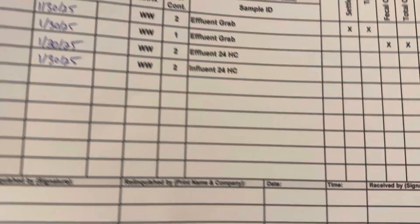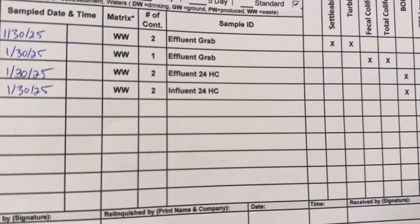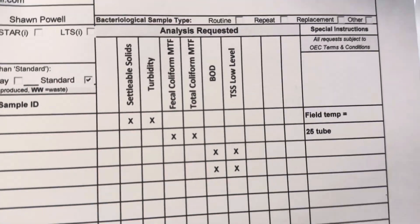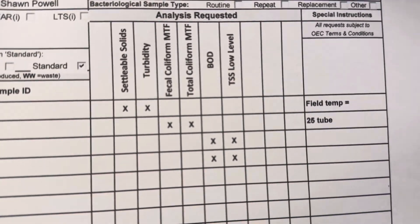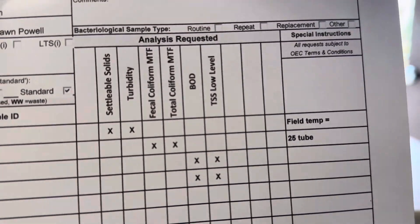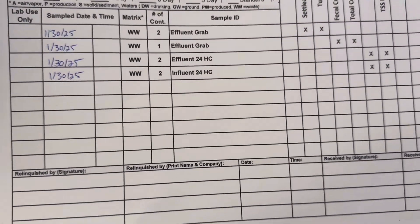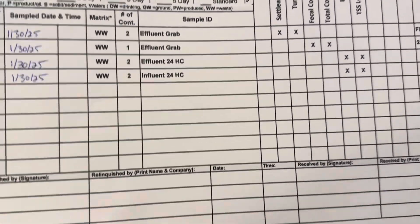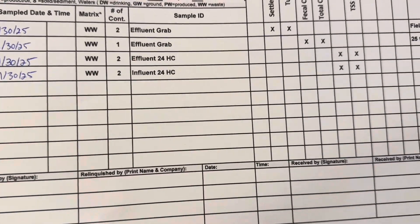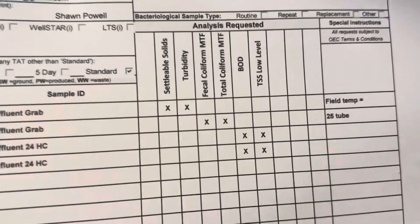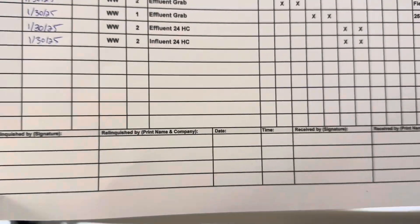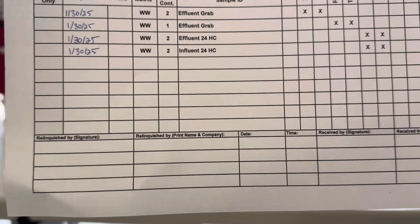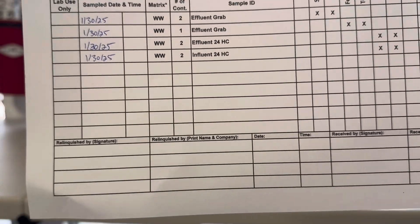This chain of custody sheet is your actual legal document. The bottle labels don't stick around, but these are held for at least three years — in California, anyway. You'll see there are all sorts of sample IDs: HC means 24-hour composite. There are lots of different analyses listed. Some plants do way more than this every week. It just depends on your permit and your discharge requirements.